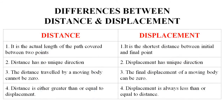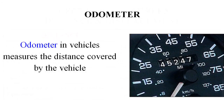The fourth difference: distance is either greater than or equal to displacement; displacement is always less than or equal to distance. You must have heard of the odometer — it is a device installed in vehicles to measure the distance covered. So distance covered by a vehicle can be easily measured by the odometer.